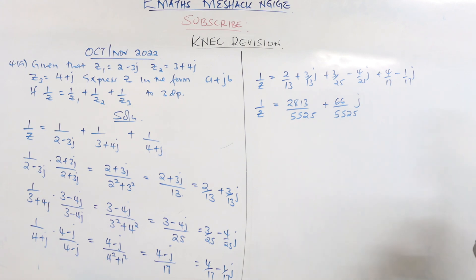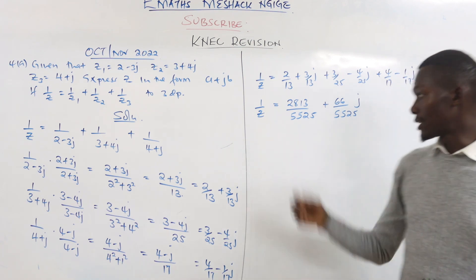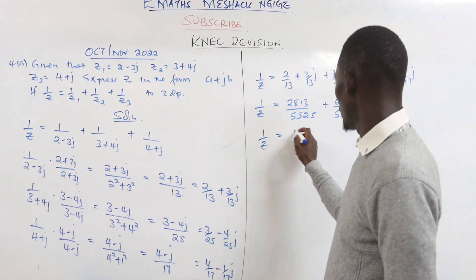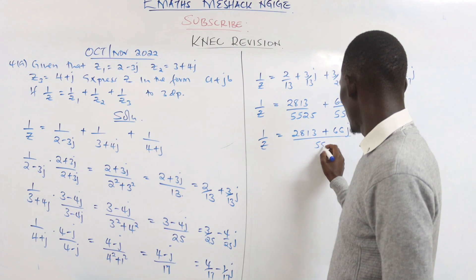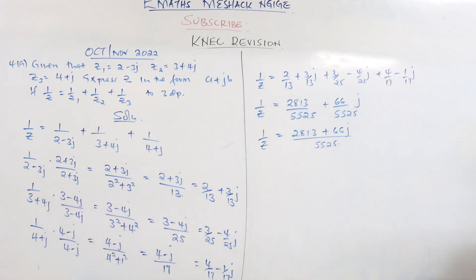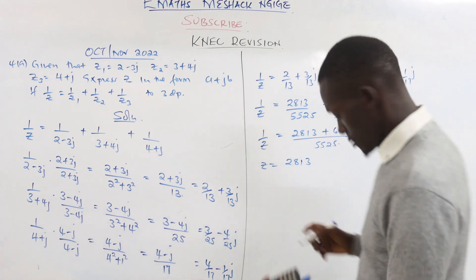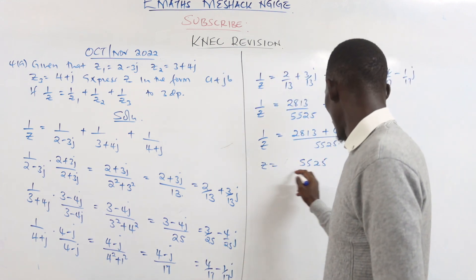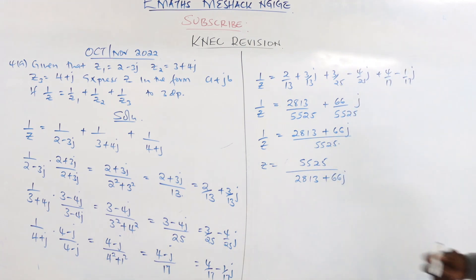Since we want z, not 1/z, we take the reciprocal: z = 5525/(2813 + 66j). The complex number is now in the denominator, so we multiply again by the conjugate (2813 - 66j)/(2813 - 66j). The numerator becomes 5525 × (2813 - 66j) = 1,554,125 - 364,650j.